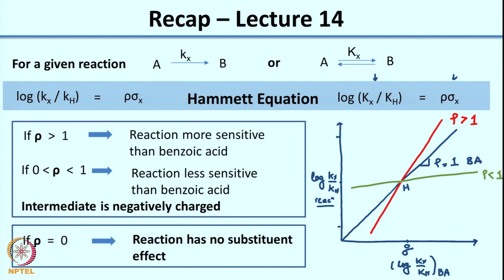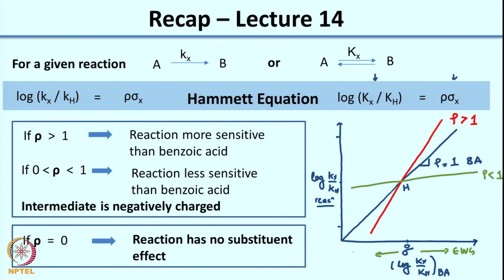The line always goes through (0,0) corresponding to hydrogen. A positive slope means electron-withdrawing groups are on the positive x-axis side and electron-releasing groups on the negative side. A positive slope indicates that electron-withdrawing groups increase the reaction rate and electron-releasing groups decrease it. This tells you the intermediate is stabilized by electron-withdrawing groups and destabilized by electron-releasing groups, exactly similar to benzoic acid.